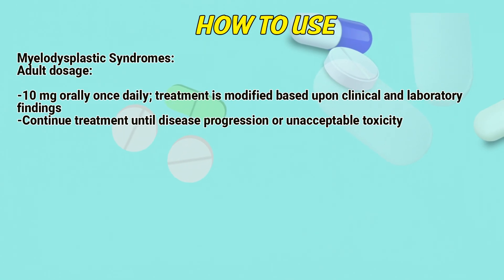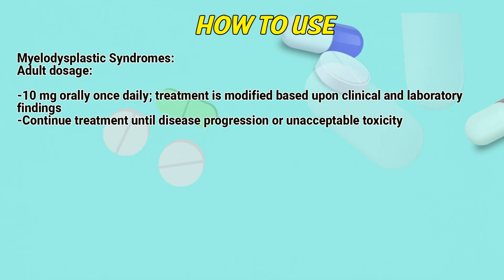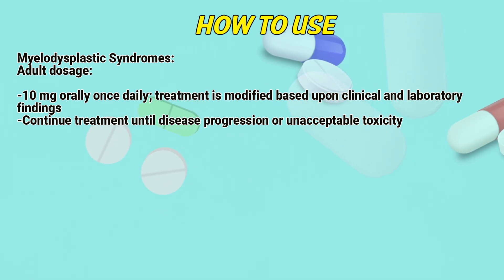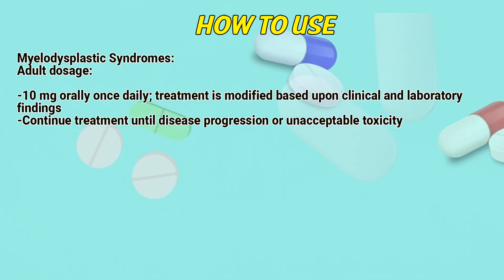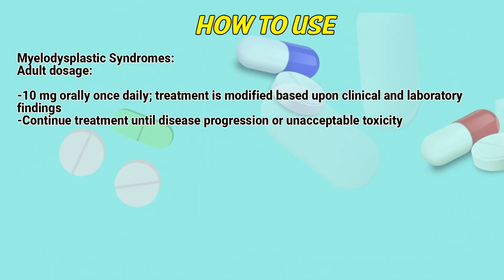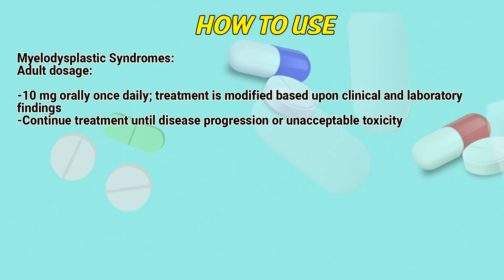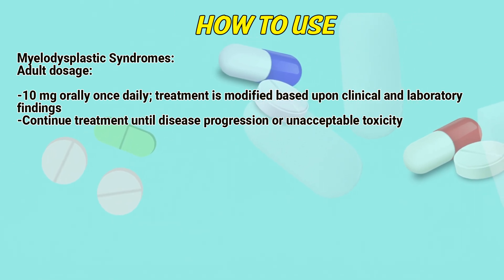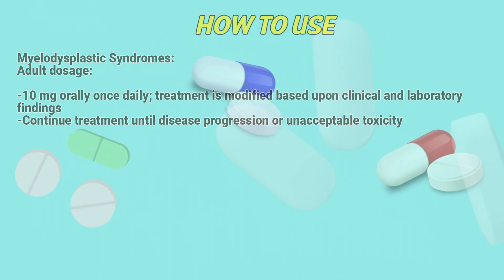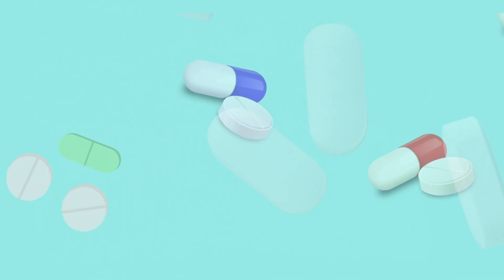How to use: Myelodysplastic syndrome, adult dosage: 10 mg orally once daily. Treatment is modified based upon clinical and laboratory findings. Continue treatment until disease progression or unacceptable toxicity.